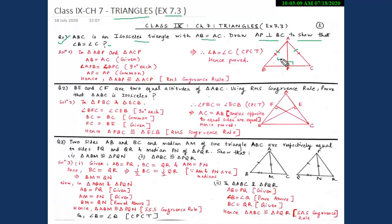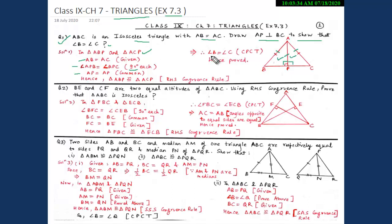We will consider two triangles — triangle ABP and triangle ACP — and prove that they are congruent. In these two triangles, AB is equal to AC (given). Angle APB is equal to angle APC; they are both 90 degrees each. And side AP is common in both triangles.